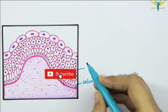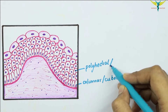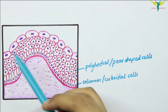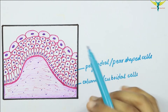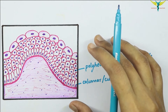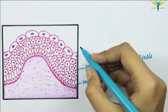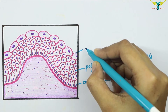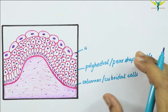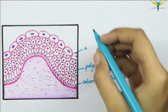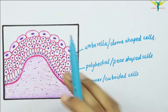The middle layers are made up of polyhedral or pear-shaped cells, as you can see. The cells in the surface layer of this epithelium are large and often shaped like an umbrella or a dome.